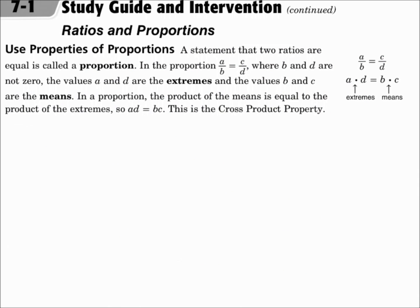Use properties of proportions. A statement that two ratios are equal is called a proportion. In the proportion A over B equals C over D where B and D are not zero, the values A and D are the extremes and the values B and C are the means. In a proportion, the product of the means is equal to the product of the extremes, so AD equals BC. This is the cross product property. So when two ratios equal each other, we will cross multiply to solve it.